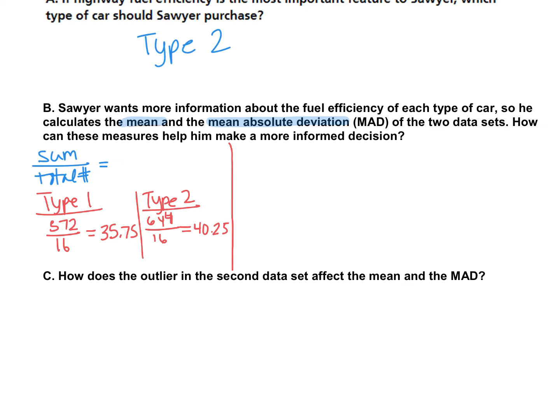All right, so our type one car, we're going to take each data point. So we had a data point at 33, and we're going to subtract that from the mean. We're going to take the absolute value, so 33 minus 35.75. That's going to give you a negative number, and we're just going to take the positive value, which is 2.75. And how many 33s did we have in our data set? We had two of those.